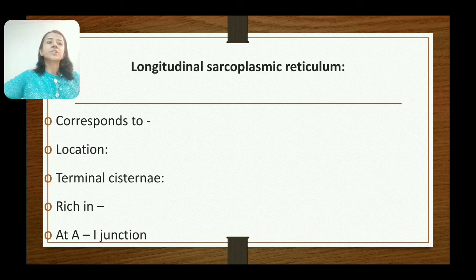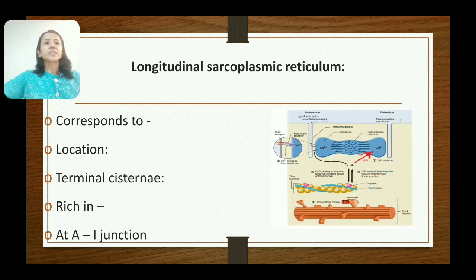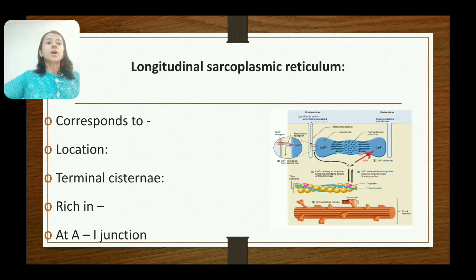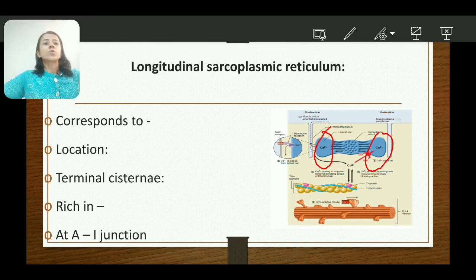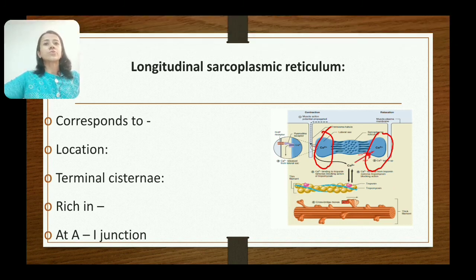The next structure is the longitudinal sarcoplasmic reticulum. The sarcoplasmic reticulum of skeletal muscle corresponds to the endoplasmic reticulum of other cells. It is located longitudinally on either side of the tubular system in the form of vesicles or sacs. These longitudinal sarcoplasmic tubules are dilated on either side of the T-tubules, forming the terminal cisternae, which are rich in glycogen and calcium ions, and lie in close contact with the T-tubules at the A-I junction.